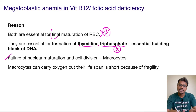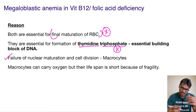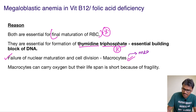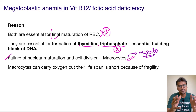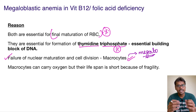Normally, as RBCs mature, their size reduces. But here, the RBCs are not getting matured, so they are left in their bigger shape, leading to macrocytes. This leads to the condition called megaloblastic anemia — named because of the big size of the RBCs.